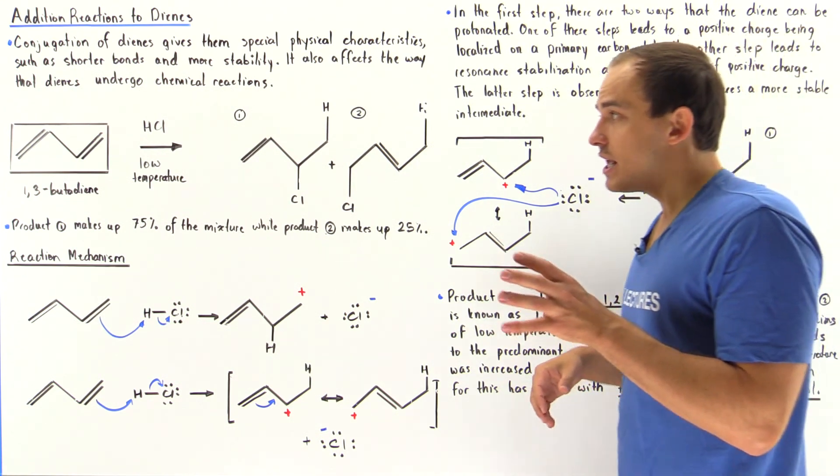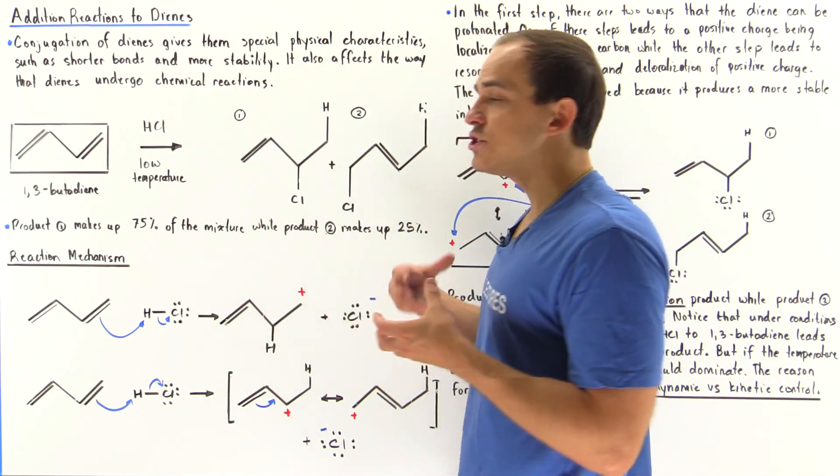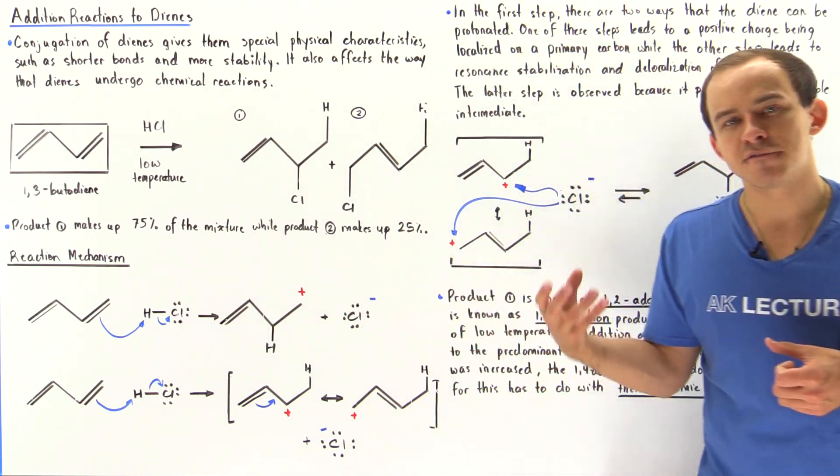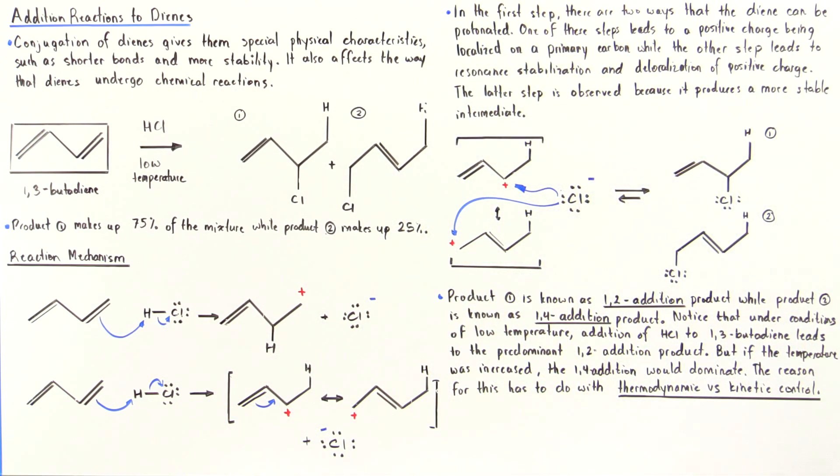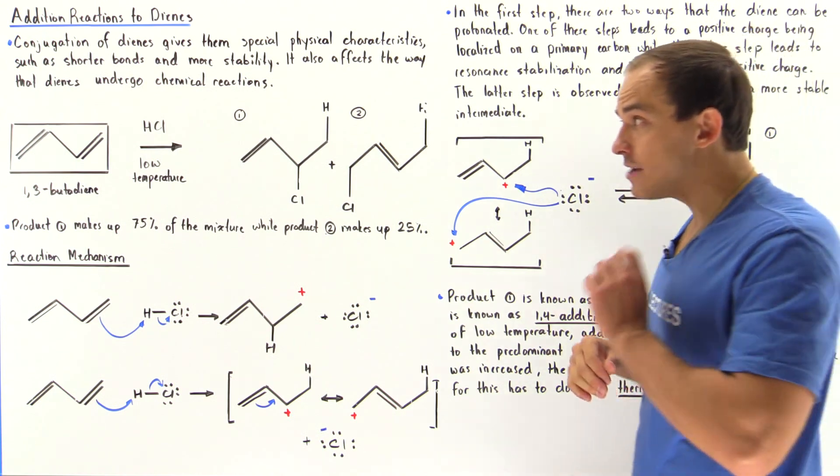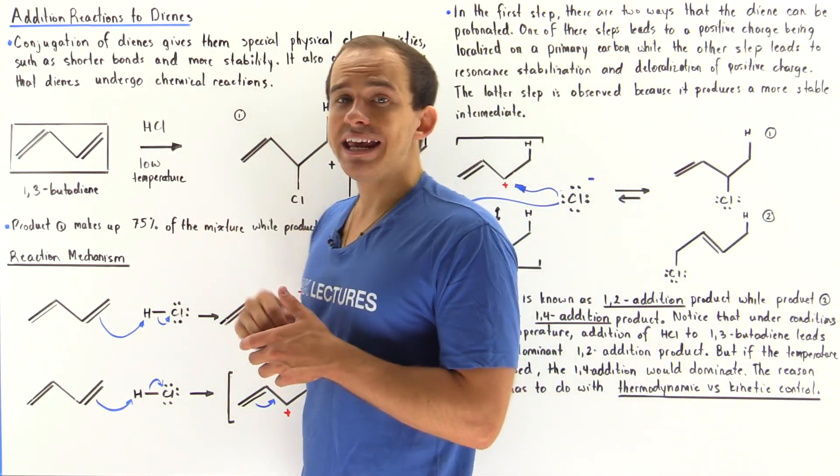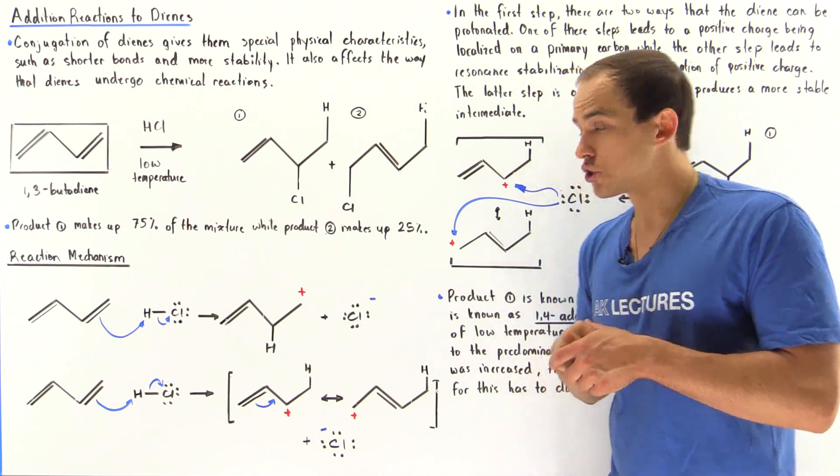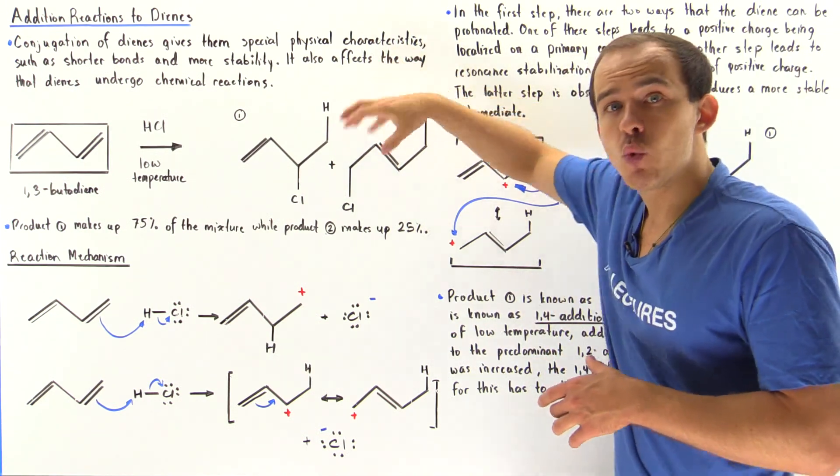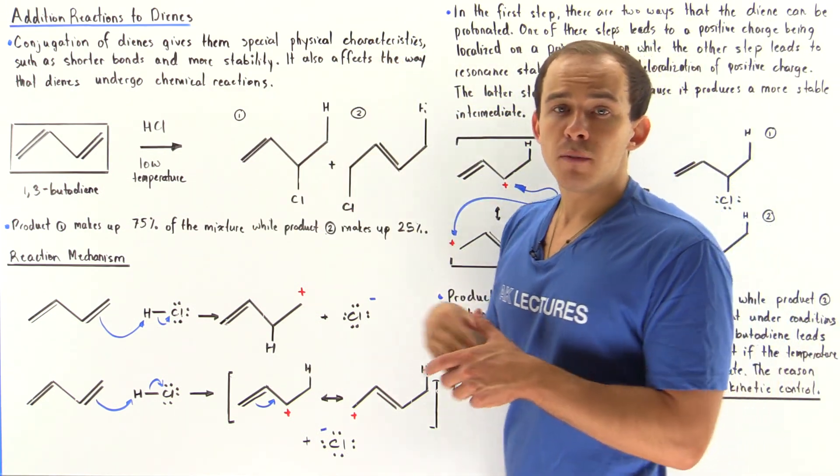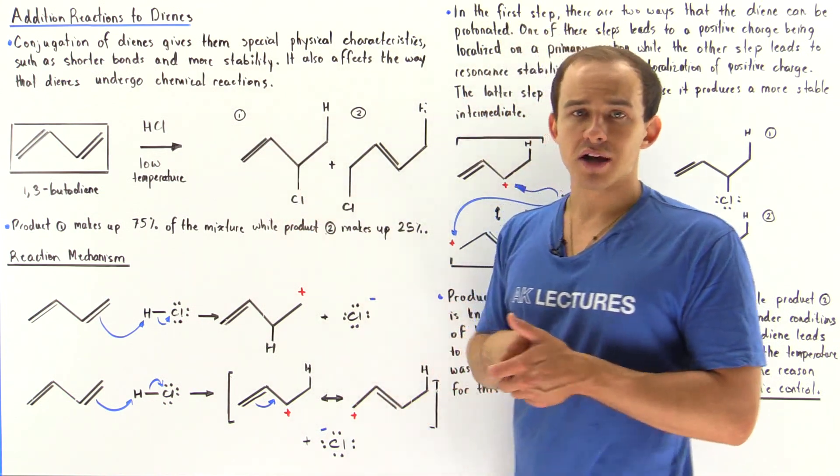But I will mention that the reason for this has to do with thermodynamic versus kinetic control. We'll see later that if we actually increase the temperature to a greater temperature, that product 2, the 1-4 addition, will predominate over product 1.